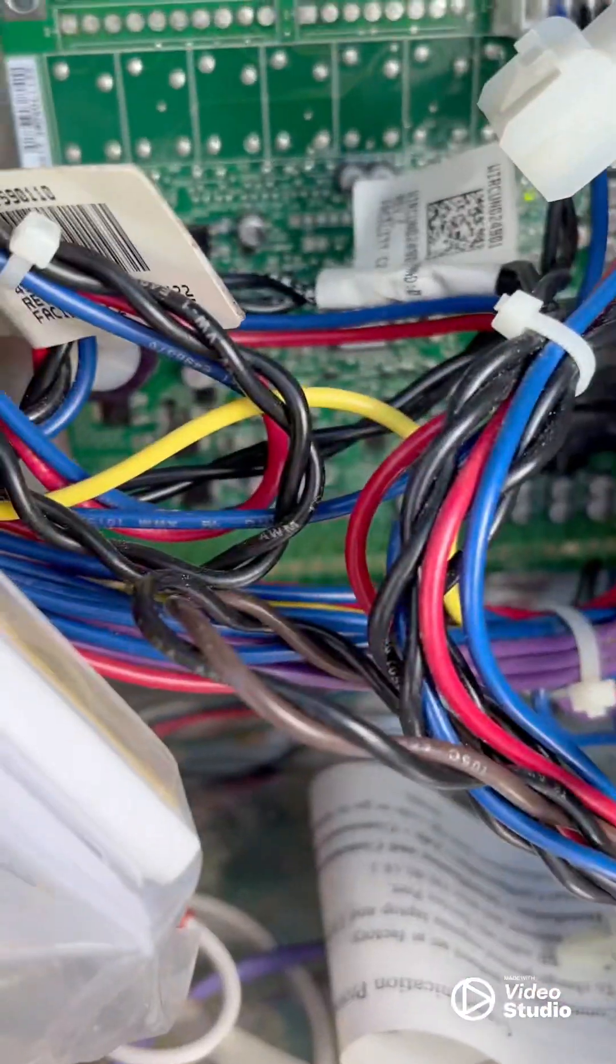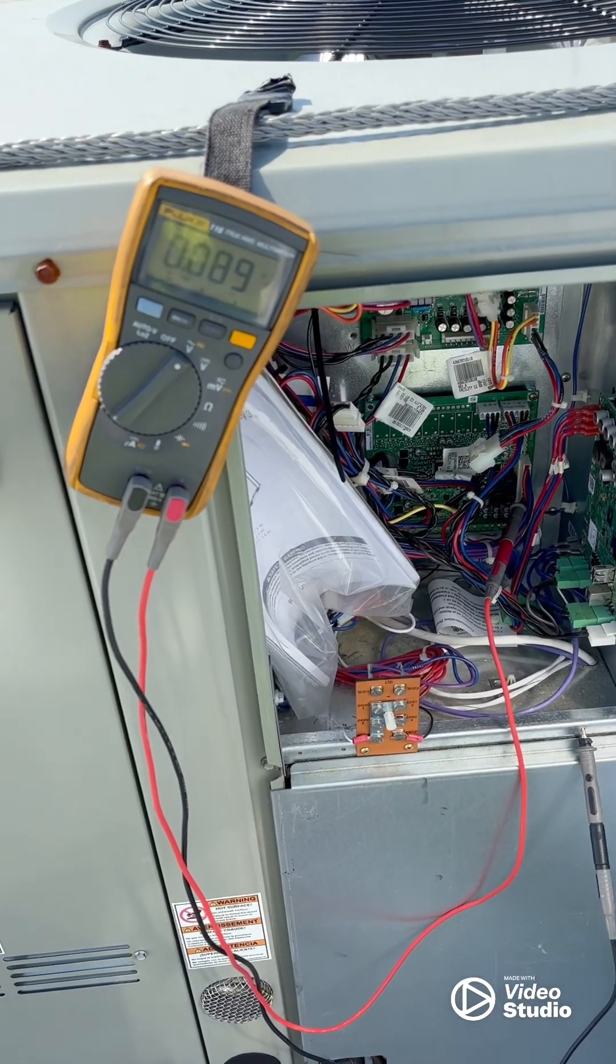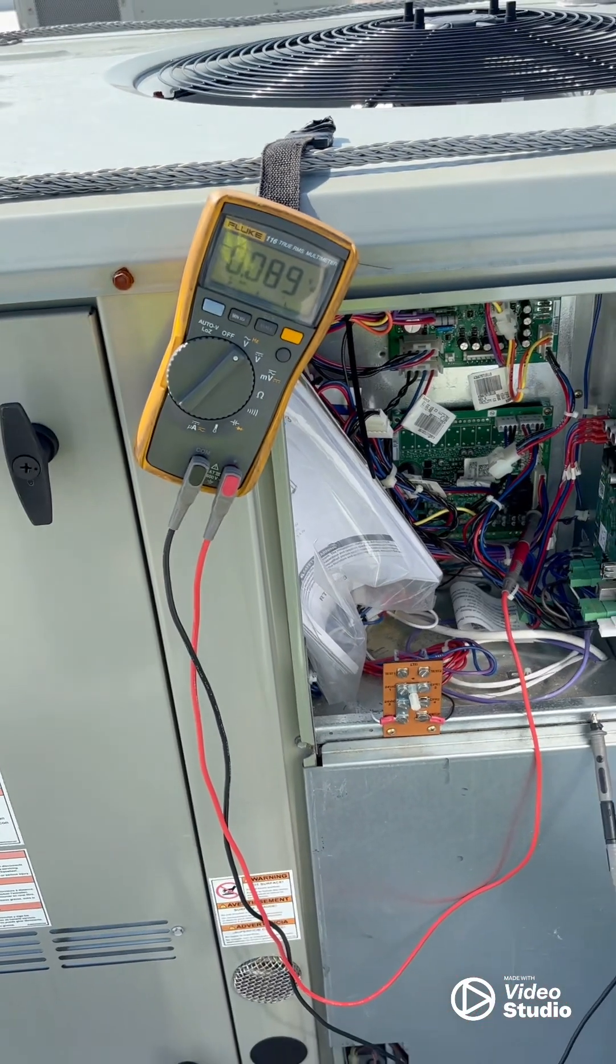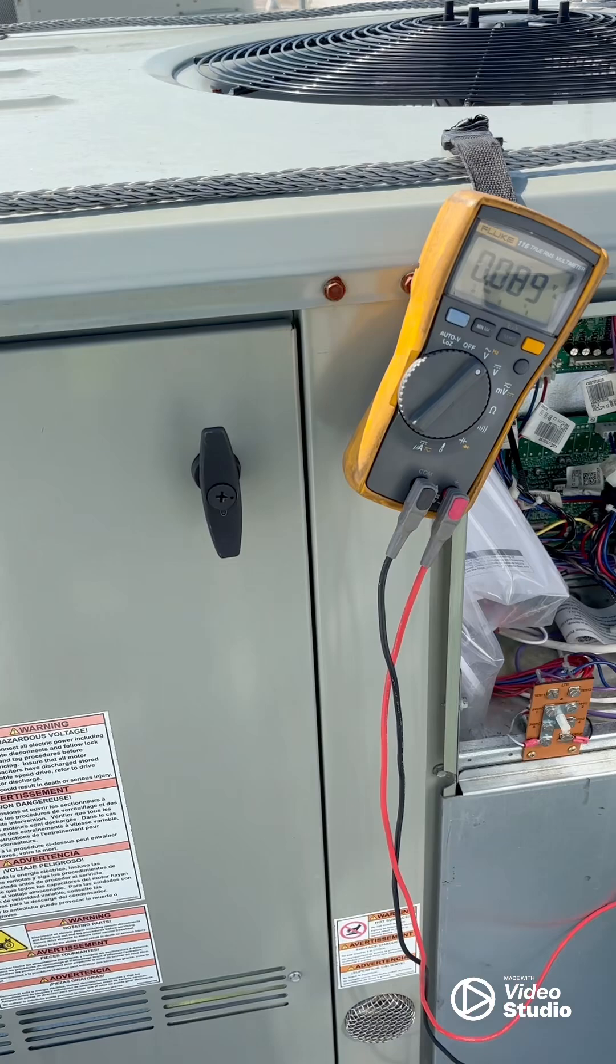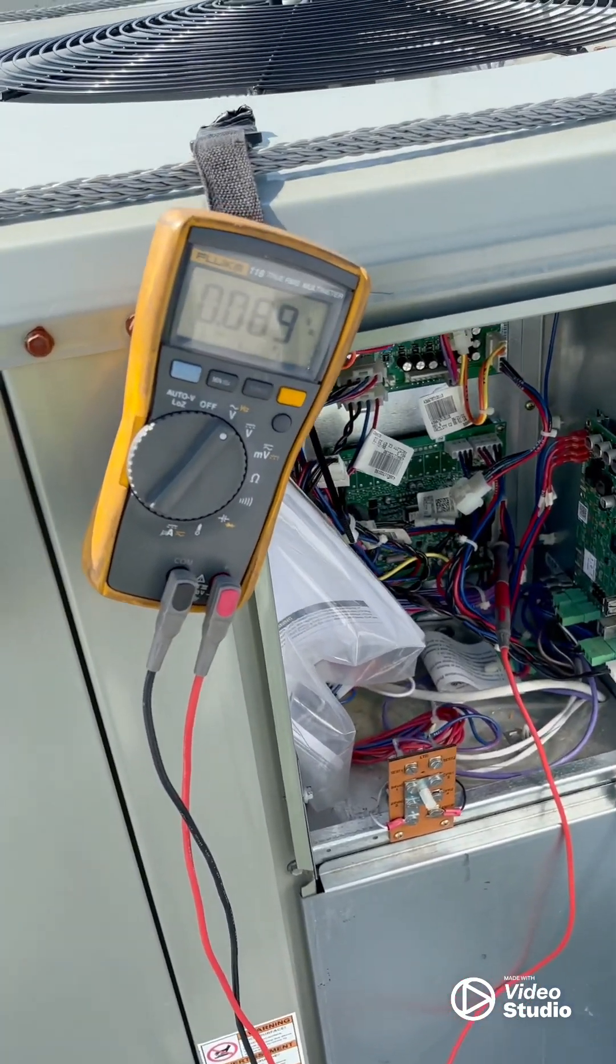So you see I got the Blanket LED on the RTRM board. I'm going to show you and confirm that this board is actually bad. I'm supposed to have 24 volts coming out of this board when I put it in test mode.